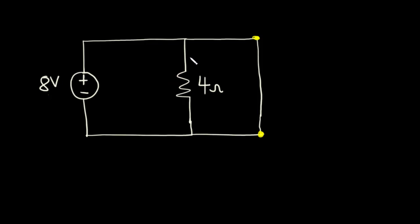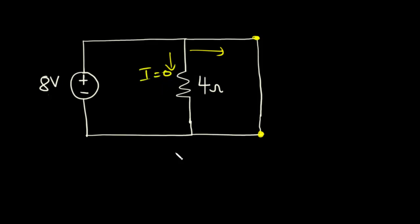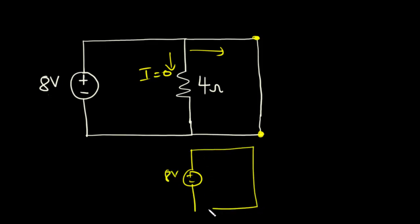Notice that whenever current approaches a junction, it divides to flow through different paths. However, for the case of a short circuit, all the current would like to flow through the low resistance path. So instead of dividing, all the current would move through that direction, with zero current moving through the other direction. When that happens, you can redraw the circuit to have the 8-volt voltage source directly connected to itself, because no current will flow through the 4-ohm resistor. So the current that flows through the circuit will be the maximum current delivered by the voltage source, which is close to infinity.